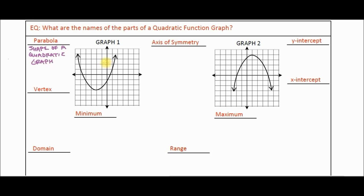Take a look at graph number one — you can see the shape here. The shape of a quadratic graph, if it's a parabola, will always look like either a U facing up, or an upside-down reflected U facing down. Both of these graphs show a parabola — that is the shape we're talking about.